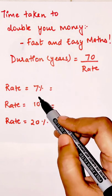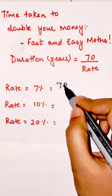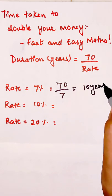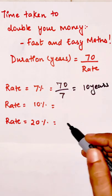So in case the rate is 7%, then 70 upon 7 will be 10 years. This means you will take 10 years to double your amount.